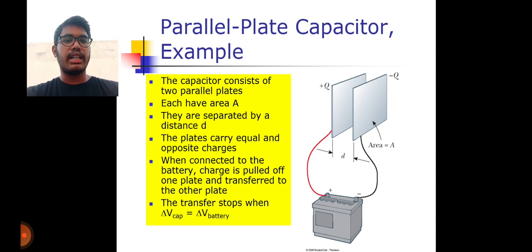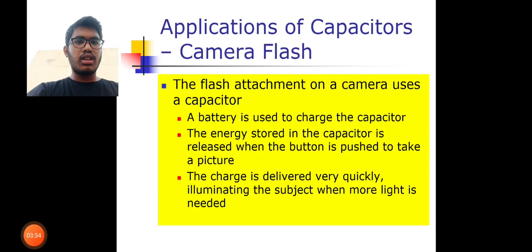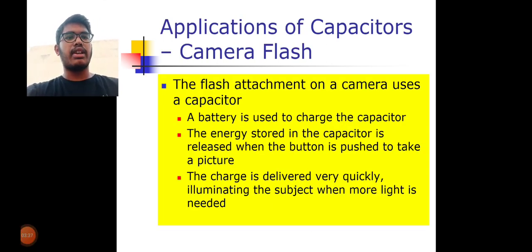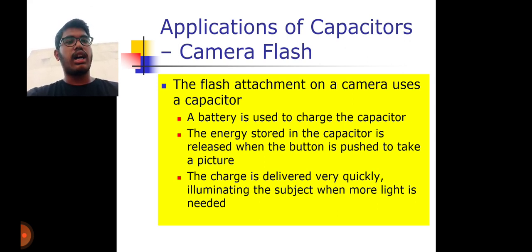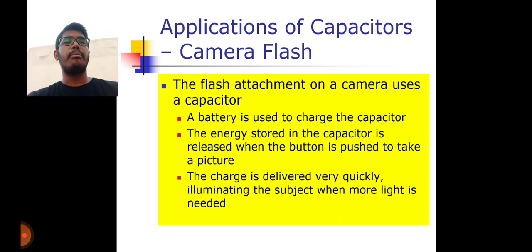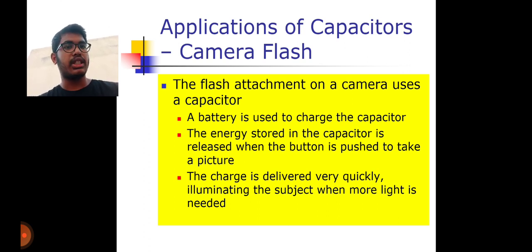Let's talk about the application of a capacitor in a camera flash. The flash attachment on a camera uses a capacitor. A battery is used to charge the capacitor. The energy stored in the capacitor is released when the button is pushed to take a picture. The charge develops very quickly, illuminating the subject when more light is needed.